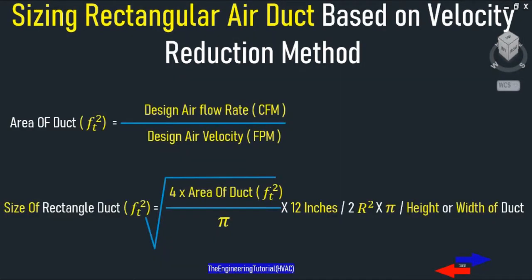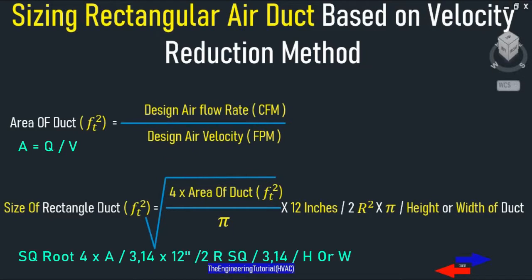To find all these branch and main duct sizes, we will use this formula: the air flow rate divided by air velocity, square root of 4 times area divided by pi, times 12 inches divided by 2, squared, times pi, divided by the height or width of the air duct.